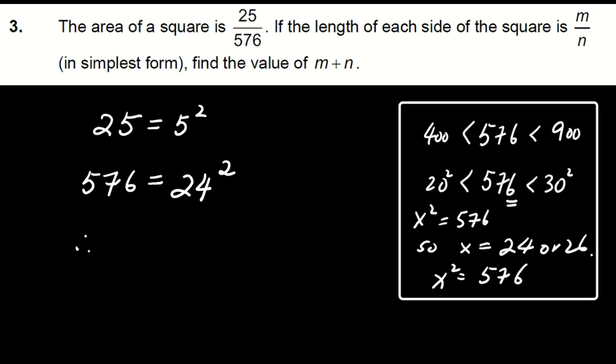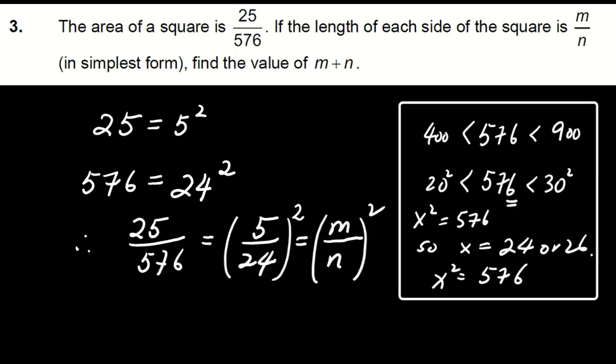Now, knowing 25 over 576 is square of 5 over 24, we can deduce that M equals 5 and N equals 24. So M plus N equals 29. That concludes our discussion on question 3.